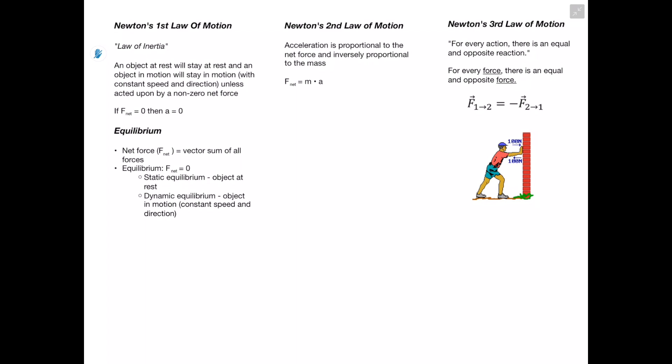Newton's Second Law states that acceleration is proportional to the net force and inversely proportional to mass, giving us F = ma. It's important to note that this force is specifically the net force — the sum of all forces on the system. Whenever we write F = ma, we always assume that F represents the net force.